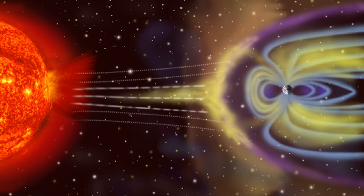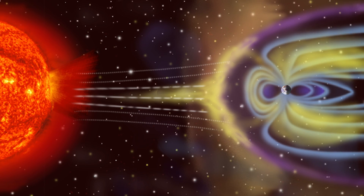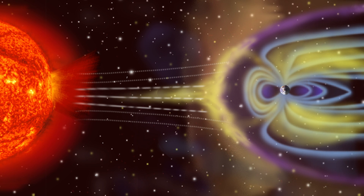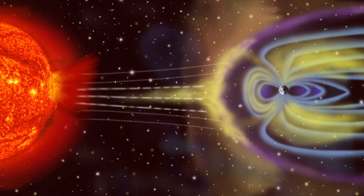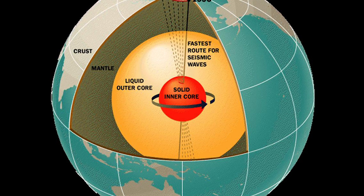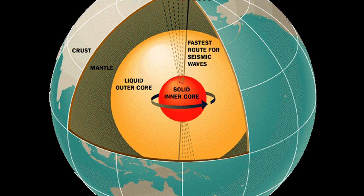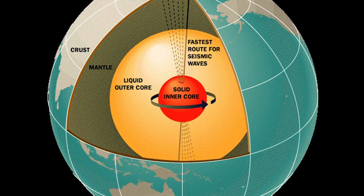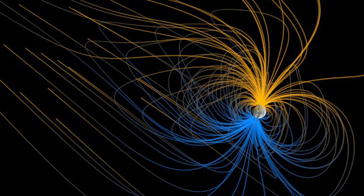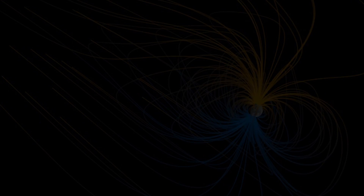The Earth's magnetic field is a big energy field produced by many different sources. The primary source is molten iron which is flowing around inside the Earth's core, and this creates electrical currents which then create this big magnetic field which encompasses the planet.